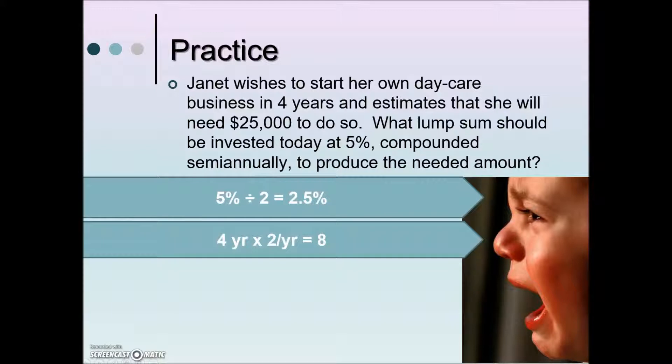Next, we need to calculate our n, how many compounding periods will occur during this time frame. We have a 4 year term compounded semi-annually, so 4 times twice per year gives us an 8.